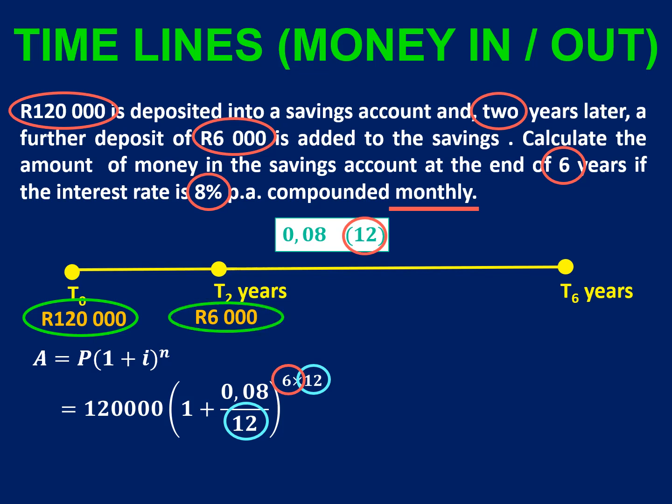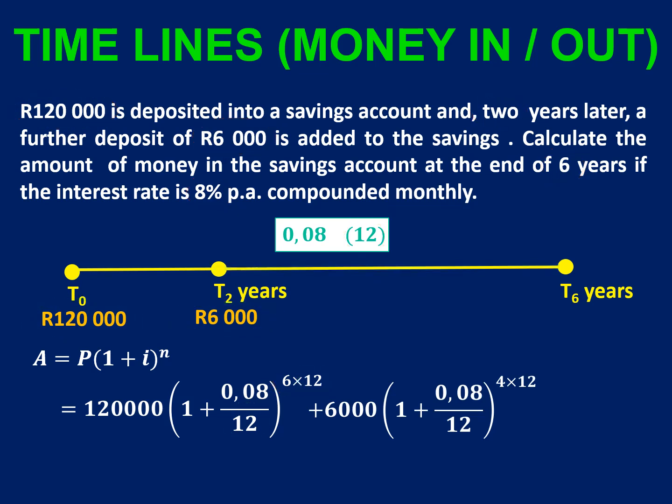Then we have another investment of R6,000 going into the account, and that R6,000 is going to be there for four years. So we add another investment to the account, and again because it is monthly, we divide by 12 in the interest rate and multiply the years by 12. If you type it into your calculator, you should get a final answer of R201,874.26. So just consider it as two completely separate investments.